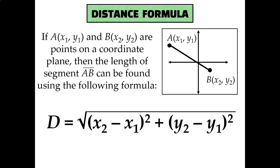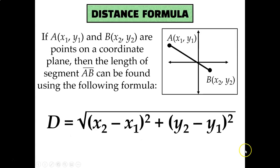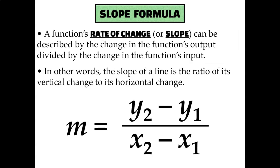As a quick refresher, this is the distance formula: √((x₂ − x₁)² + (y₂ − y₁)²), and this is the slope formula: (y₂ − y₁) / (x₂ − x₁). We'll use the distance formula to calculate the lengths of segments and show that they're congruent or not congruent, and we'll use the slope formula to calculate the slopes of two lines — if they're equal then they're parallel, and if they're opposite reciprocals then they're perpendicular.